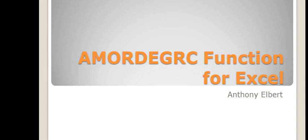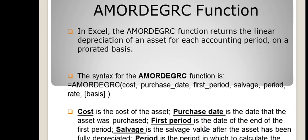So now we're going to learn about the AMORDEGRC function — I do not know how to say that correctly. I'm going to give you the definition of this function, the syntax for it, and show you one example on how to use it. In Excel, this function returns the linear depreciation of an asset for each accounting period on a prorated basis.